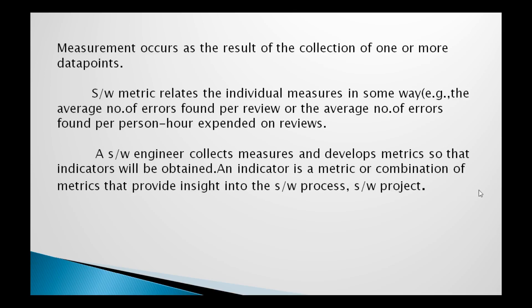An indicator is a metric or a combination of metrics that provides insight into the software process and software project. An indicator can be a single metric or a combination of metrics. For a small project with fewer requirements, a single metric may suffice. For a complex project, several metrics are needed to follow and develop.